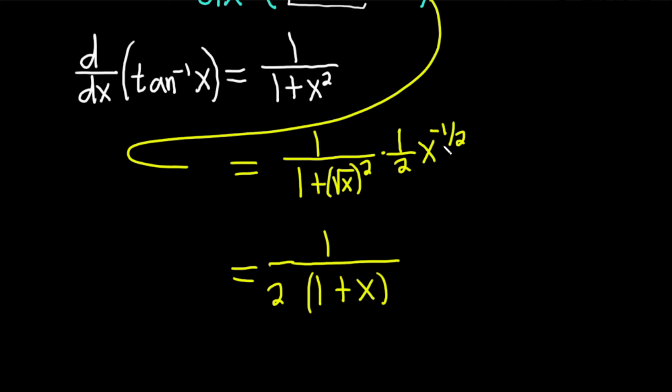And when this comes downstairs, it becomes 1 over x to the 1/2, which can be written as 1 over the square root of x. So I'm going to write this as the square root of x like this. And that would be the final answer.